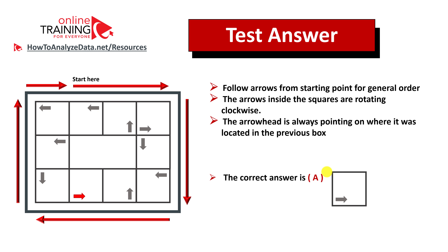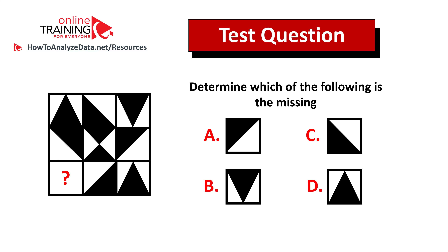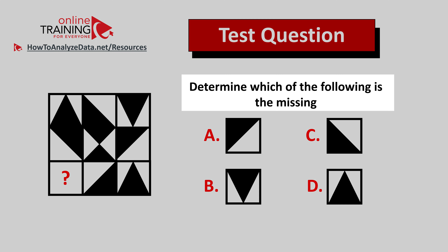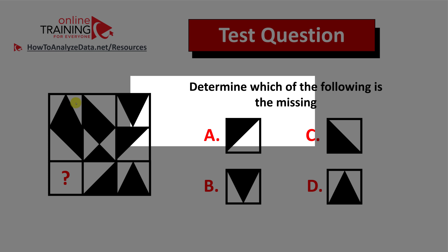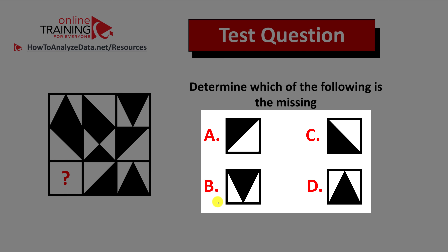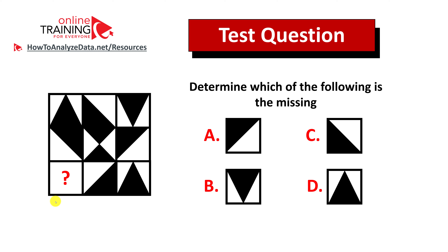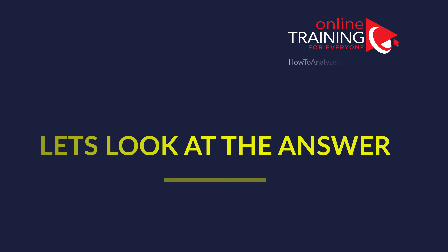I truly hope you've nailed this question. Let me share an interesting question which tests your reasoning skills. Determine which of the following is missing. You're presented with a large square logically broken into a three by three grid of small squares, with four different choices: A, B, C, and D. You have a missing square in the bottom left corner. Now might be a good time to pause this video and give yourself 10 to 20 seconds to figure out the solution.